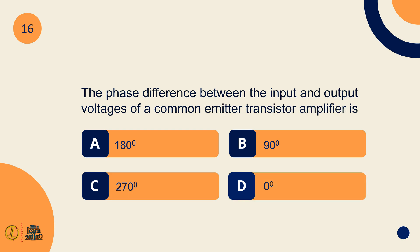The phase difference between the input and output voltages of a common emitter transistor amplifier is 180 degree.